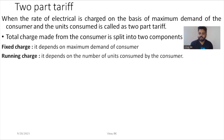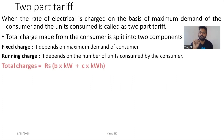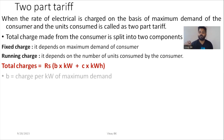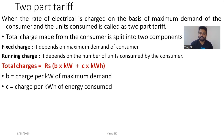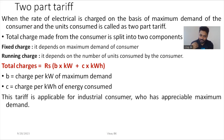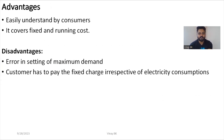The second component is running charge. Running charge depends on the number of units consumed by the consumer. So the total charge equals fixed charge plus running charge, where the fixed charge is the charge per kilowatt of maximum demand and the running charge is the charge per kilowatt hour of energy consumption. This tariff is applicable for industrial consumers who have appreciable maximum demand. The advantage is that it is easily understood by consumers and covers both fixed and running costs.